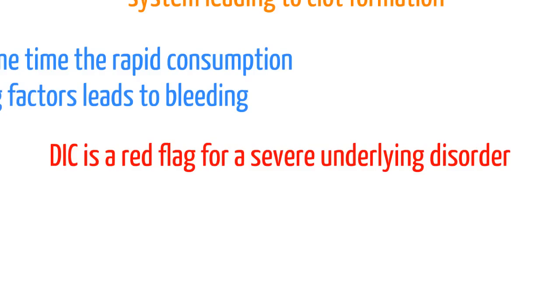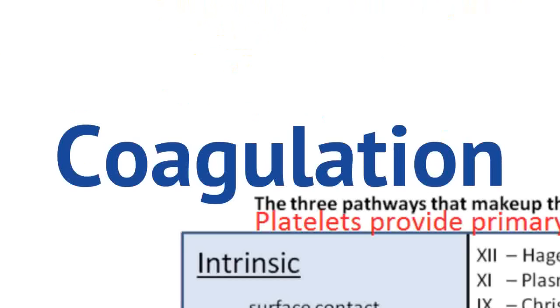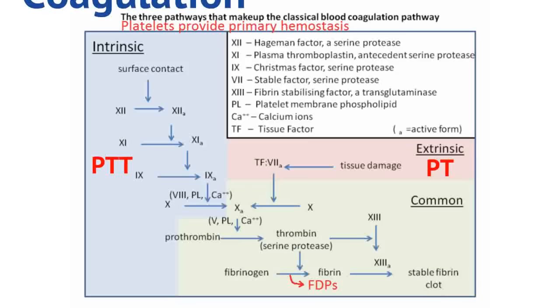DIC is not only characterized by clot formation, but also by excessive bleeding. In patients who do have DIC, this is a red flag for a severe underlying disorder. DIC is never a primary diagnosis, but a secondary diagnosis.